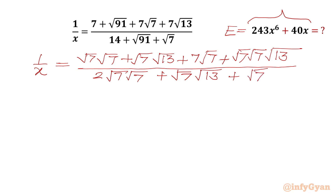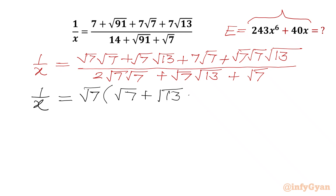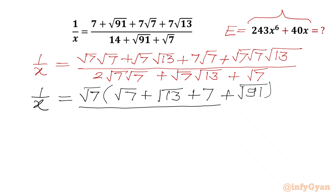Now we will take root 7 common from numerator and denominator. So we will write 1 over x equal to root 7 times, and in the bracket we will write root 7 plus root 13. Root 7 times root 13 plus root 7 times root 13 which is root 91. In the numerator and in the denominator we will write root 7 common out, in the bracket 2 root 7 plus root 13 plus 1.